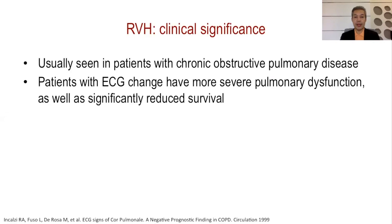The clinical significance of right ventricular hypertrophy: it is usually seen in patients with pulmonary disease, including cor pulmonale — heart disease secondary to a lung problem. Similar to other hypertrophy patterns, RVH is associated with more severe pulmonary dysfunction and significantly reduced survival. These changes are sometimes seen in patients with acute massive pulmonary embolism, which we know is quite fatal.